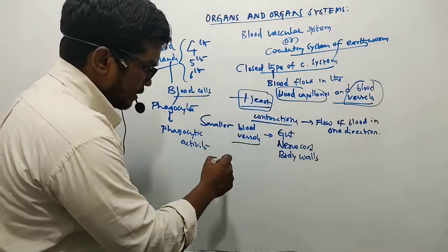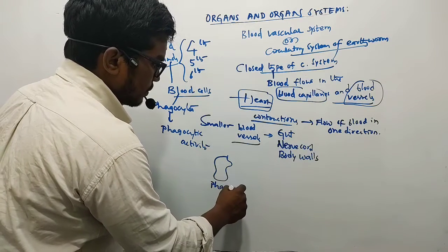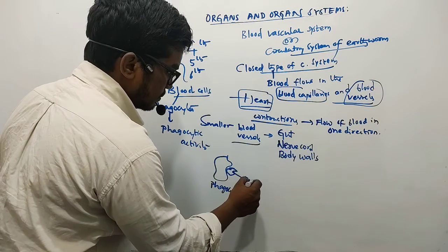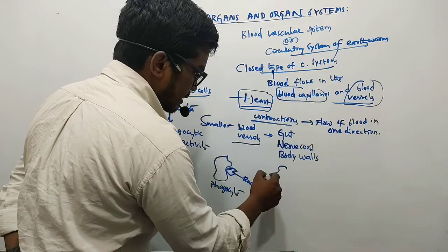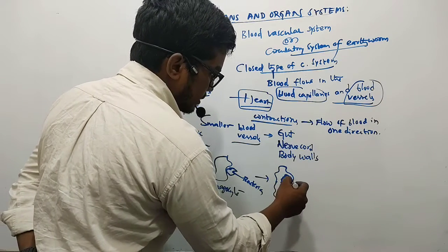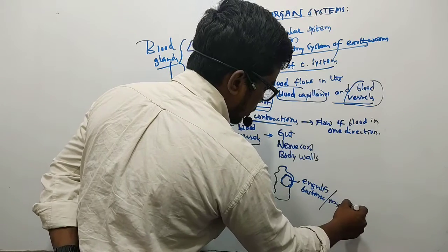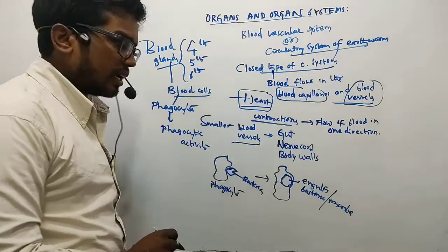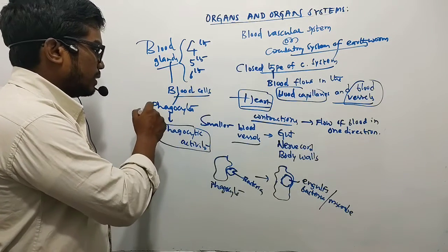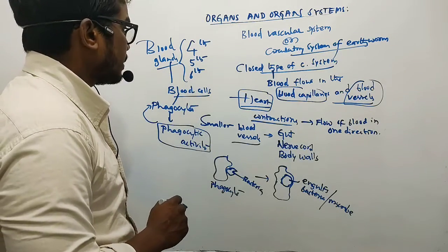The phagocytes produced by the blood glands perform phagocytic activity. For example, when a bacterium or any other microbe is encountered, the phagocyte engulfs it and further destroys or kills it. This process is called phagocytosis.